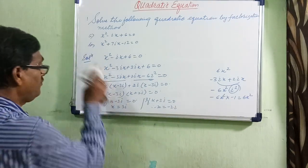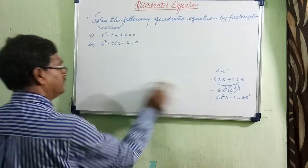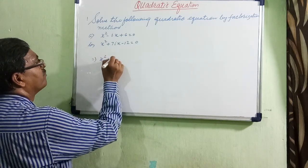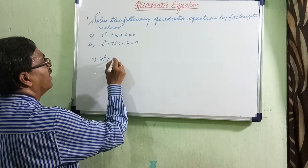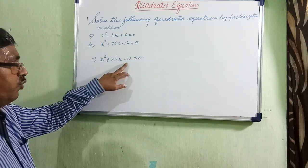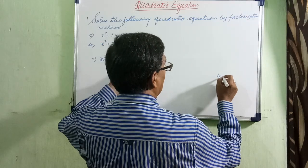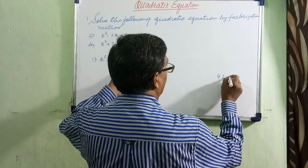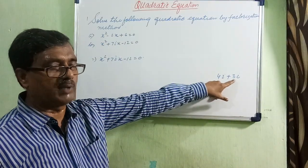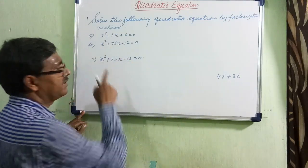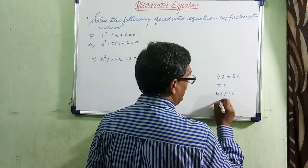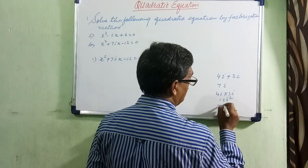Let us discuss the second one — it is also almost the same. The equation is x squared plus 7ix minus 12. We split the middle term as 4i plus 3i. Here the sign is positive, so both parts must be positive. But when you multiply 4i into 3i, you get 12i squared, which equals minus 12.